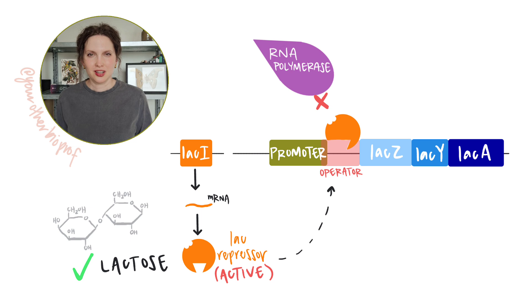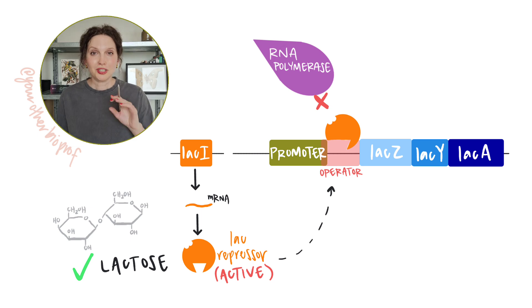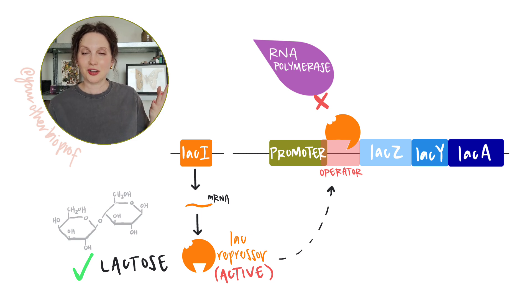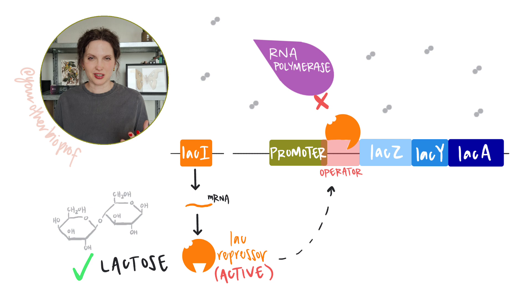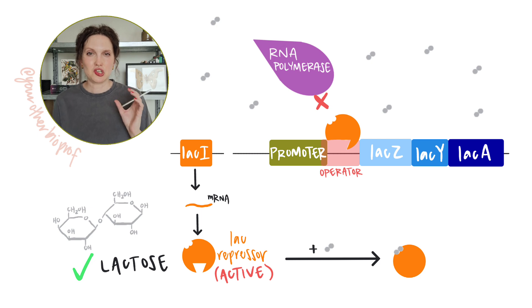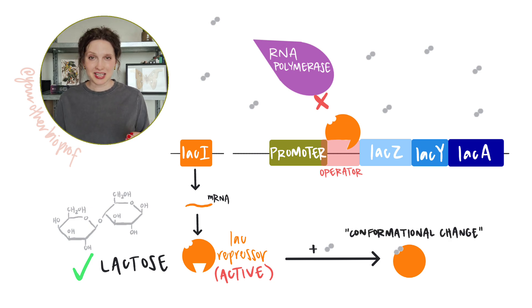But what happens when conditions change? When lactose does become available, the cell is going to need to turn on transcription of the structural genes. So how does that switch from off to on happen? Well, look at the operon here. What needs to change in order to be able to transcribe the structural genes? We've got to get that repressor out of the way. Enter a molecule called an inducer, a type of effector, a small molecule that binds to a regulatory protein and alters its activity. When the repressor binds to the inducer, that causes a change of shape in the repressor protein, a conformational change. So with that conformational change, the DNA binding site that the repressor uses to bind to the operator is no longer open. It's lost its affinity for binding the operator.